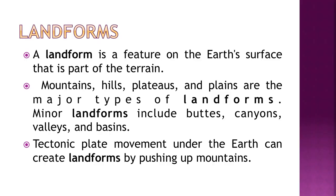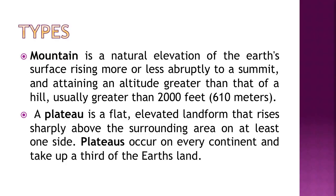A landform is a feature on the earth's surface that is a part of the terrain. Mountains, hills, plateaus and plains are the major types of landforms. Minor landforms include buttes, canyons, valleys and basins. Tectonic plate movement under the earth can create landforms by pushing up mountains.